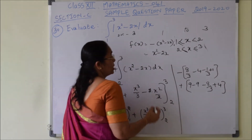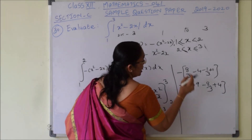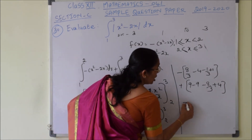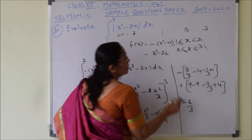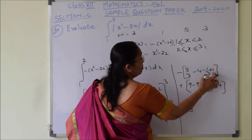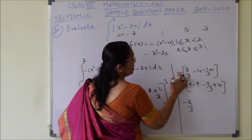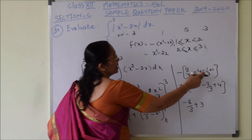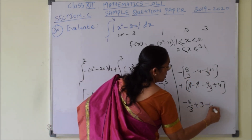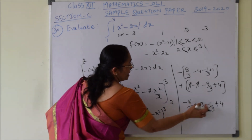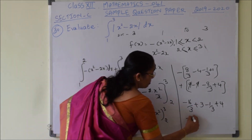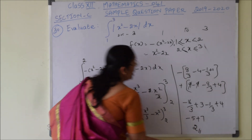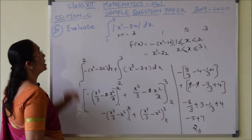On simplification: combining the minus 8 over 3 terms gives minus 16 over 3; minus 4 plus 1 is minus 3, and with the outside negative becomes plus 3; 9 and 9 cancel; and working through the arithmetic gives 1 minus 1 over 3 plus 4 equals minus 5, then 4 plus 3 is 7, and 7 minus 5 equals 2. So the final value is 2.